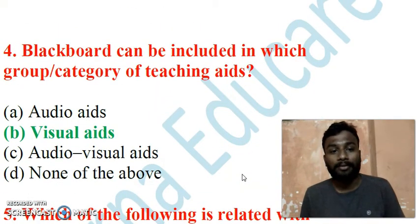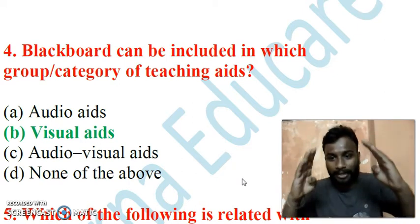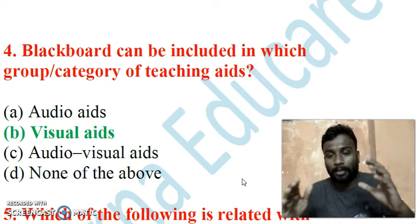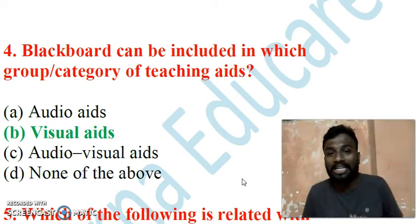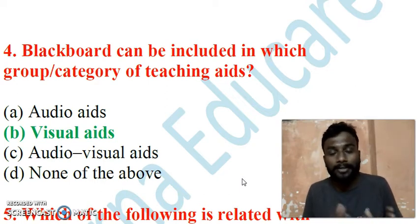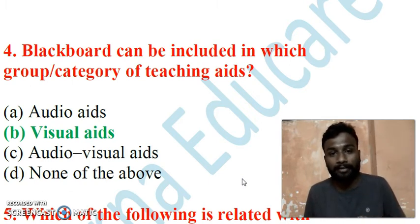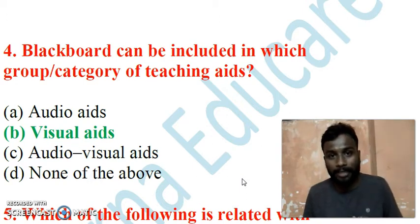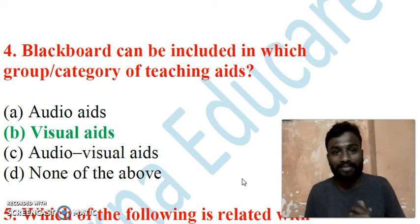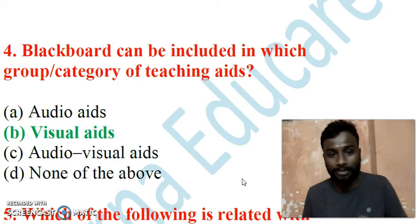Question 4: The blackboard can be included in which category of teaching aids? The blackboard is generally used for writing, and students see what is written — so it is visual in nature. Audio aids are media used for listening, while visual aids are used for seeing. Since the blackboard is used for the seeing aspect rather than the listening aspect, the correct answer is Option B: visual aids.